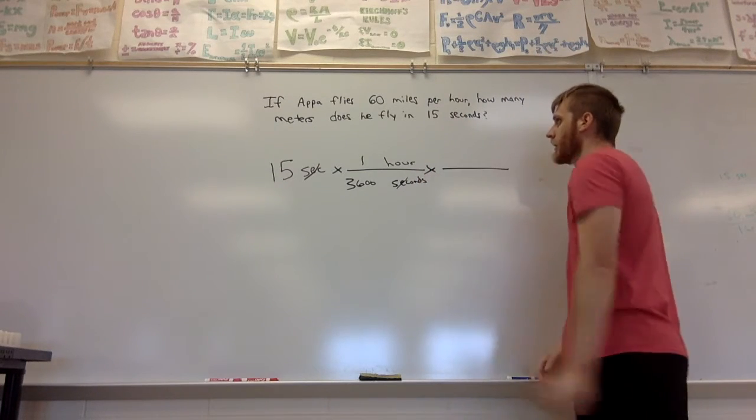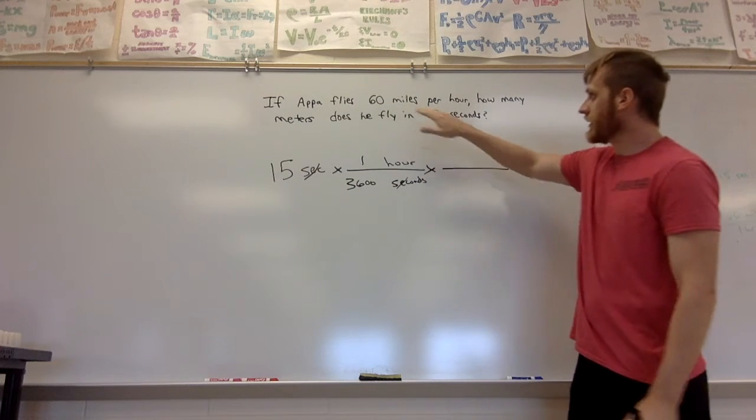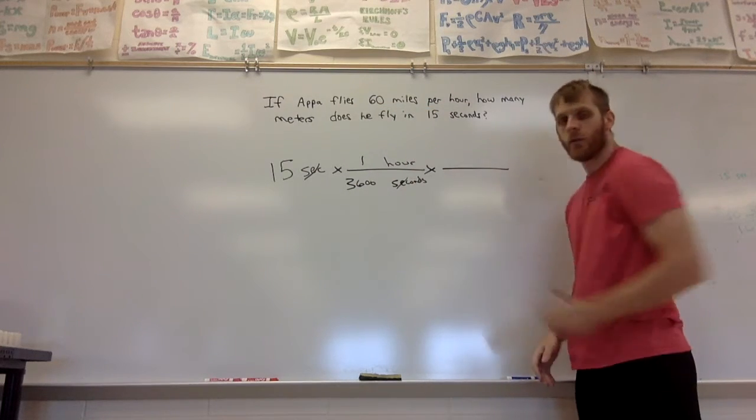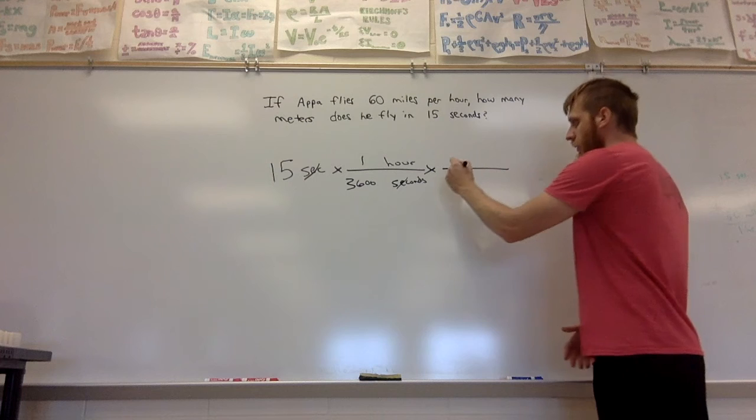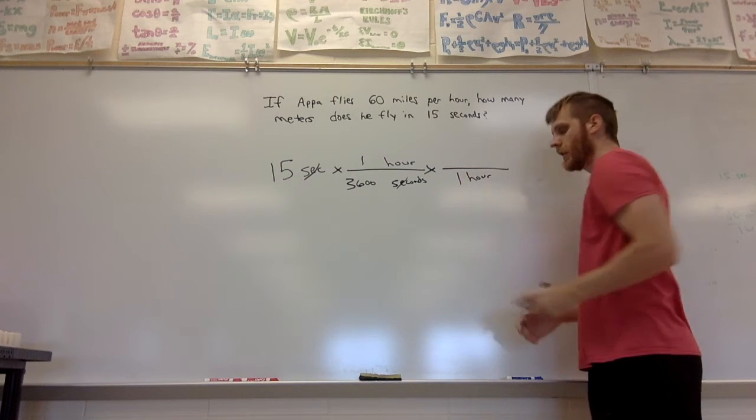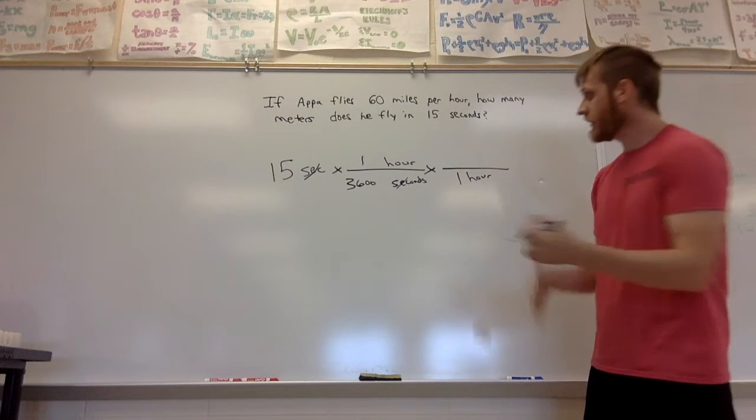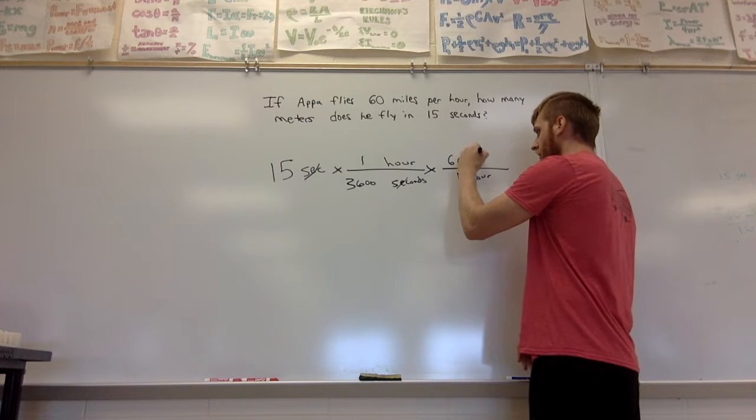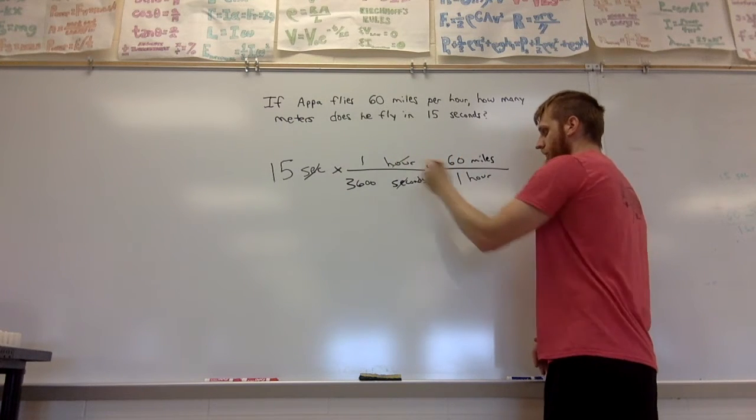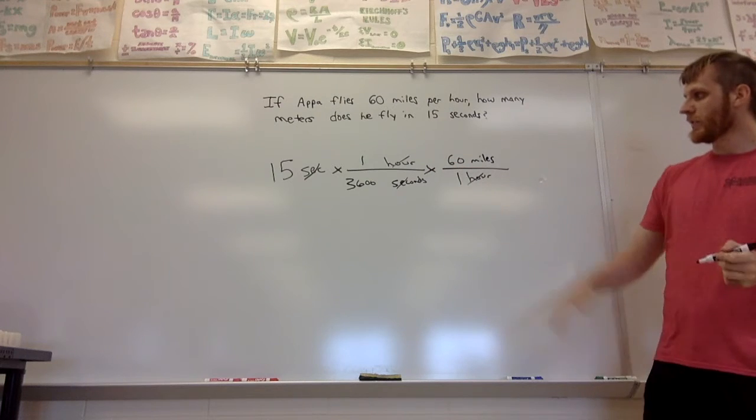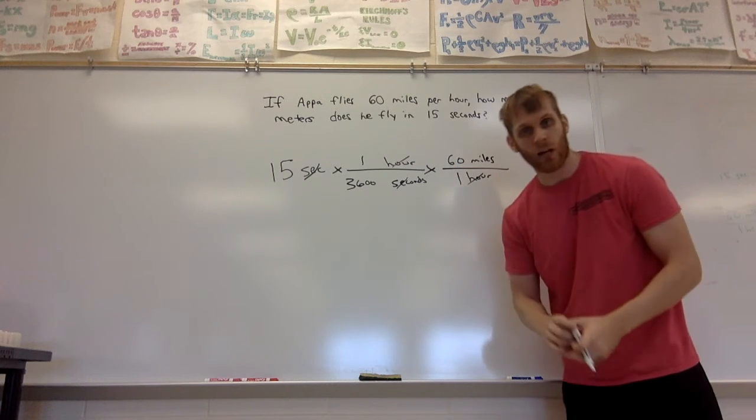So I need the conversion here. I know he travels 60 miles in an hour, so I want to get rid of hours by putting it on the bottom: one hour. Then I want distance on top, miles on top. I know that 60 miles equals one hour. Hours cancels with hours, and now I can figure out how many miles he traveled.